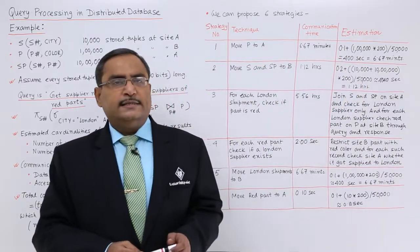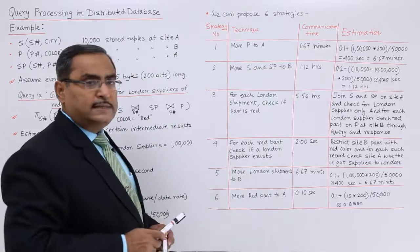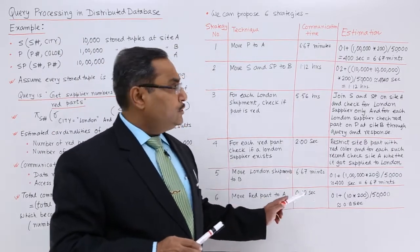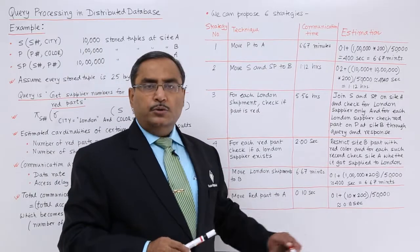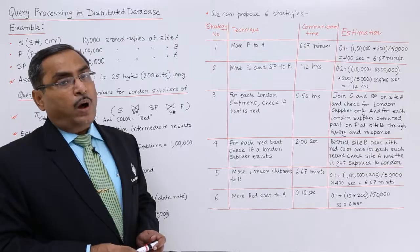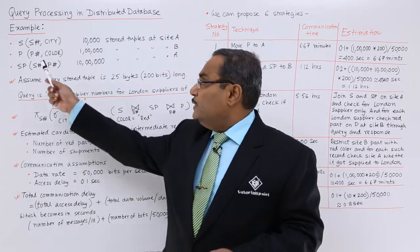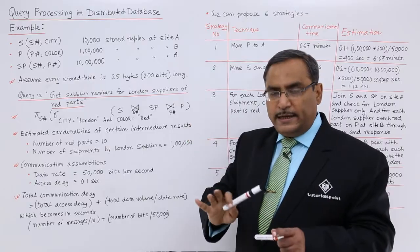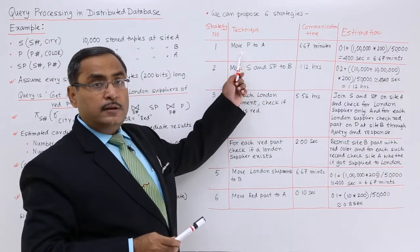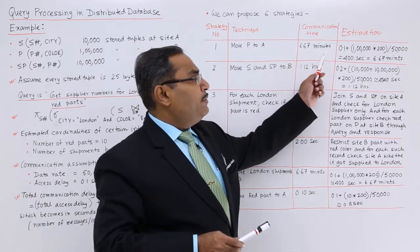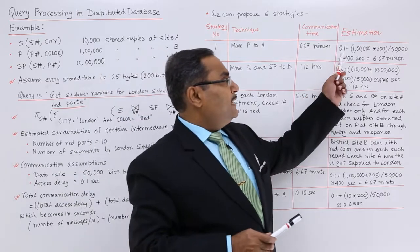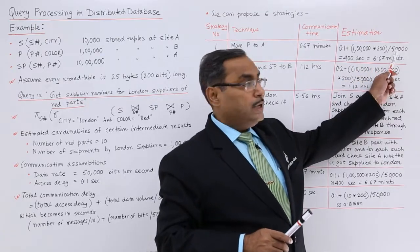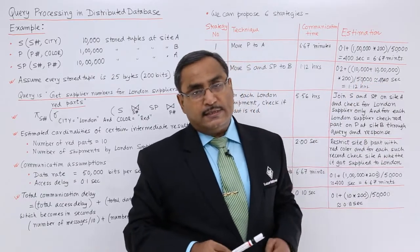We can propose six different strategies. Strategy 1: Move P to site A. Since P is only at site B, we move it to A so all data is at one site and processing can be done there. The estimated time is 6.67 minutes, because P has 1,00,000 tuples × 200 bits / 50,000 BPS = 400 seconds ≈ 6.67 minutes.